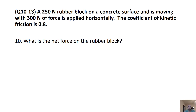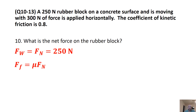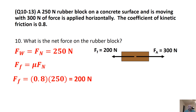Next problem: we have a 250 newton rubber block on a concrete surface that is moving with 300 newtons of force applied horizontally. The coefficient of friction is 0.8. To find net force on the rubber block, since they gave us the weight in newtons, we use that directly as our normal force. We plug in our coefficient of 0.8 and the normal force to get a frictional force of 200 newtons. So we have 300 newtons forward minus 200 newtons backward, giving us a net force of 100 newtons forward.